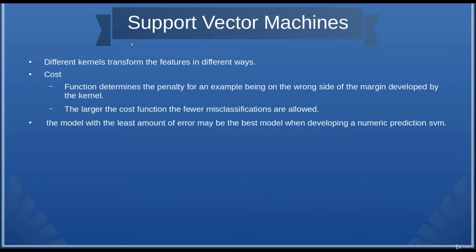One thing I want to bring up is the idea of the kernel. The kernel transforms the features of the variables in many different ways. But there's something connected with that called the cost function. This function gives a penalty for examples being on the wrong side of the margin — so if something is predicted to be one value but it's over on another value, it'll receive a penalty.